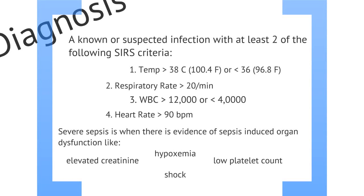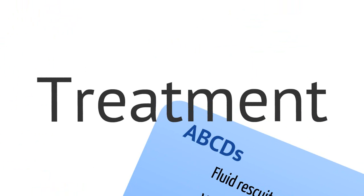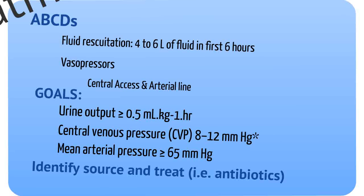Once you have made the diagnosis of sepsis, it is important to understand the treatment of sepsis. Like with any critical patient, we need to start off with our ABCDs: airway, breathing, circulation, and disability. Fluid resuscitation is one of the most important aspects of sepsis treatment. Four to six liters of fluid should be given within the first six hours. If the patient is not responsive to fluid, vasopressors can be started.